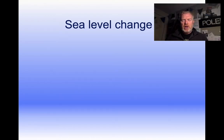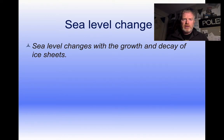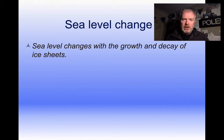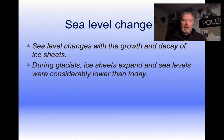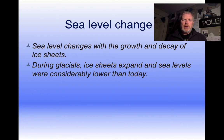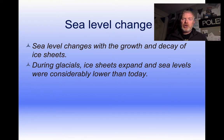Sea level change occurs really because of the growth and decay of continental ice sheets, not oceanic ones — continental ice sheets. During a glacial period ice sheets expand, and as a result water which evaporates out of the sea is then stored on the continent and can accumulate there in large volumes.